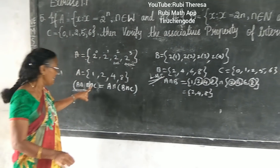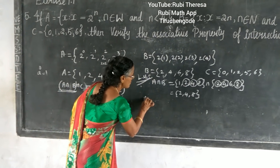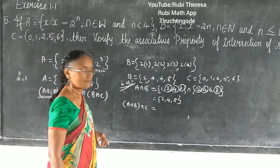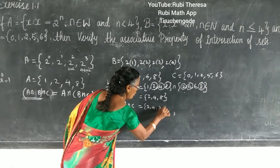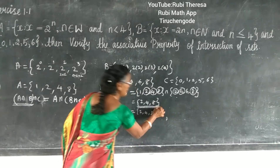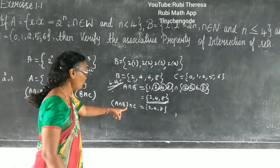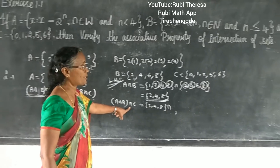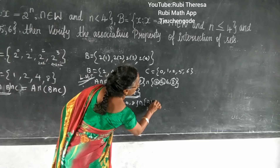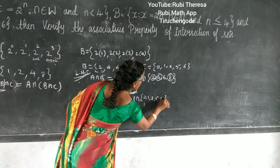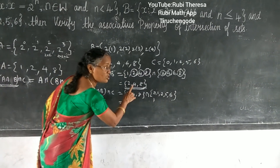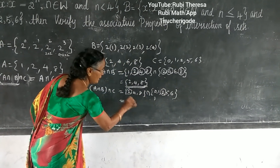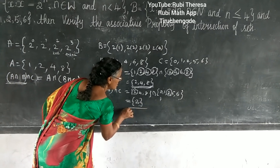Next, (A intersection B) intersection C. A intersection B = {2, 4, 8}. Now intersection C, where C = {0, 1, 2, 5, 6}. Intersection means common elements. The only common element is 2. So (A intersection B) intersection C = {2}. This is the LHS.